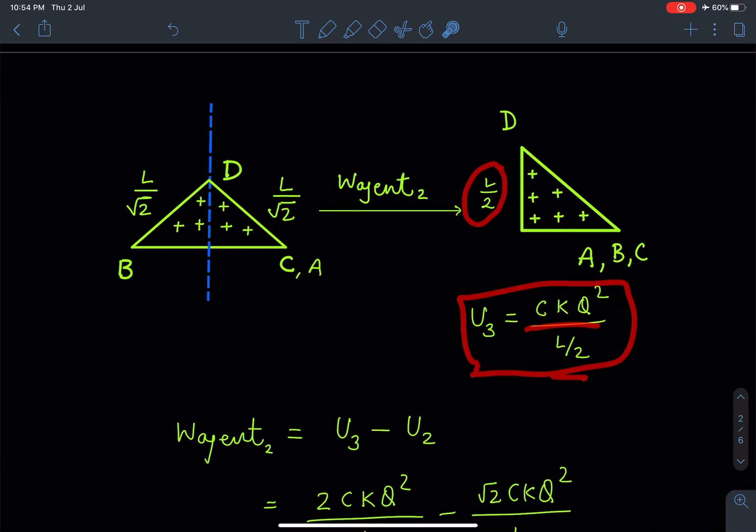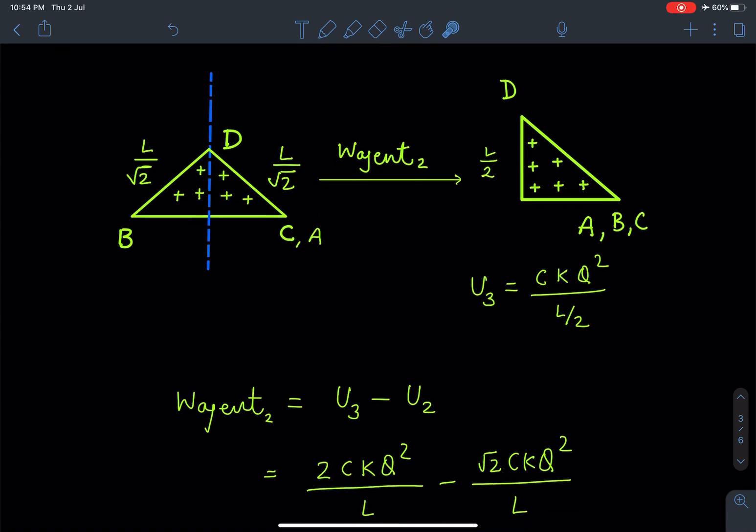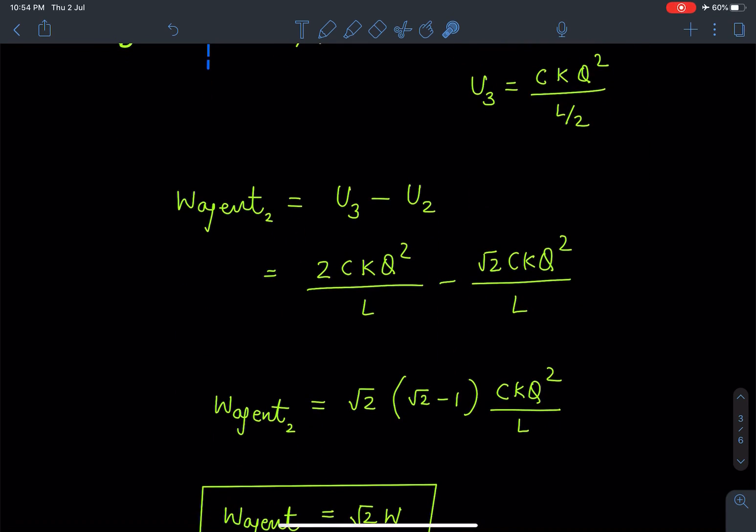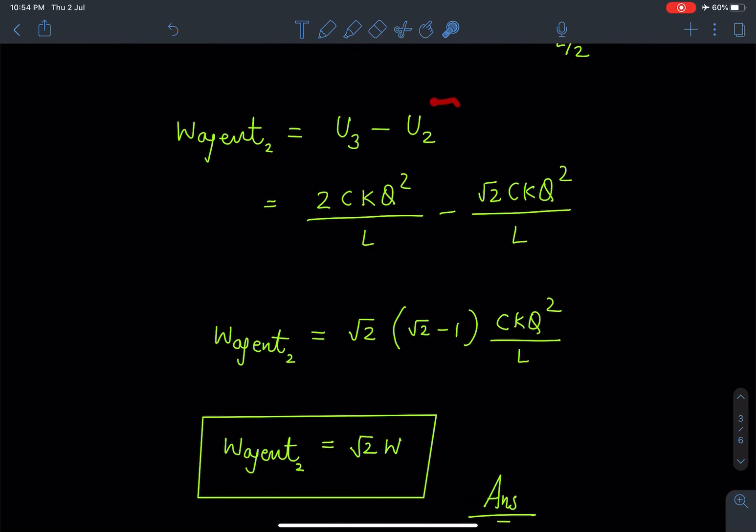So U3 becomes Ckq^2/(L/2). So W_agent2 I can write as U3 minus U2. So on substituting the values I'll be getting this as √2 times (√2 - 1)Ckq^2/L, where this term is actually the W. So our first answer is going to be √2W.